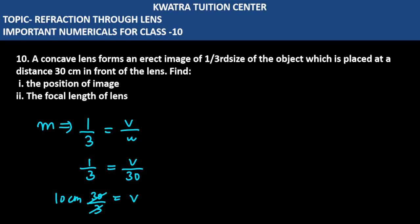1 over V minus 1 over U is equal to 1 over F. So, V is already given how much? It is 10. And here, how much U will be your value? It is minus 30. So, you get 30 as a LCM.